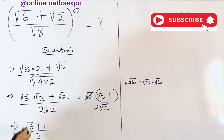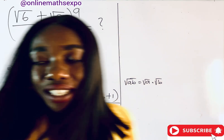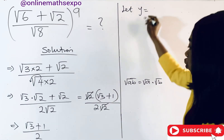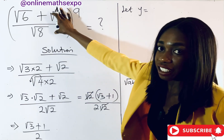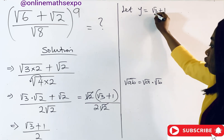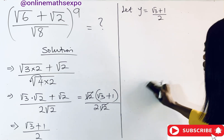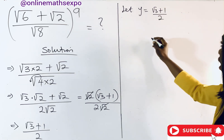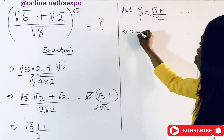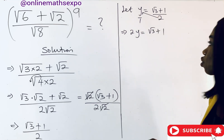Now we can take this to the next part. Let y be equal to what we have on the inside, so y equals (root three plus one) all over two. To keep simplifying, multiply both sides by two so that two y equals root three plus one.